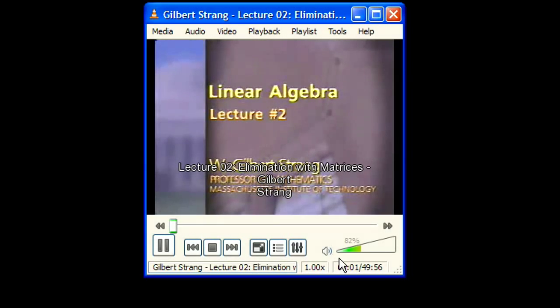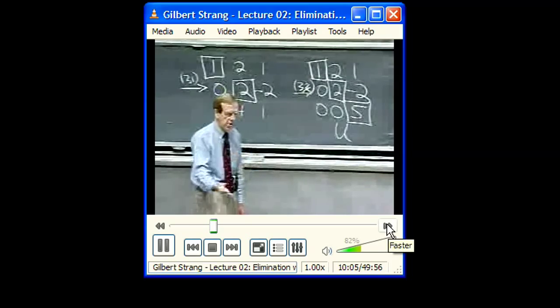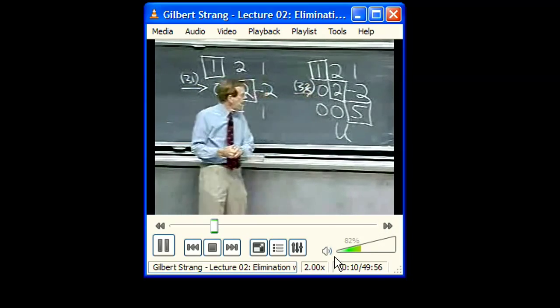So here's some examples. I didn't have to do anything special. I just followed the rule and the pivots are 1, 2, and 5.